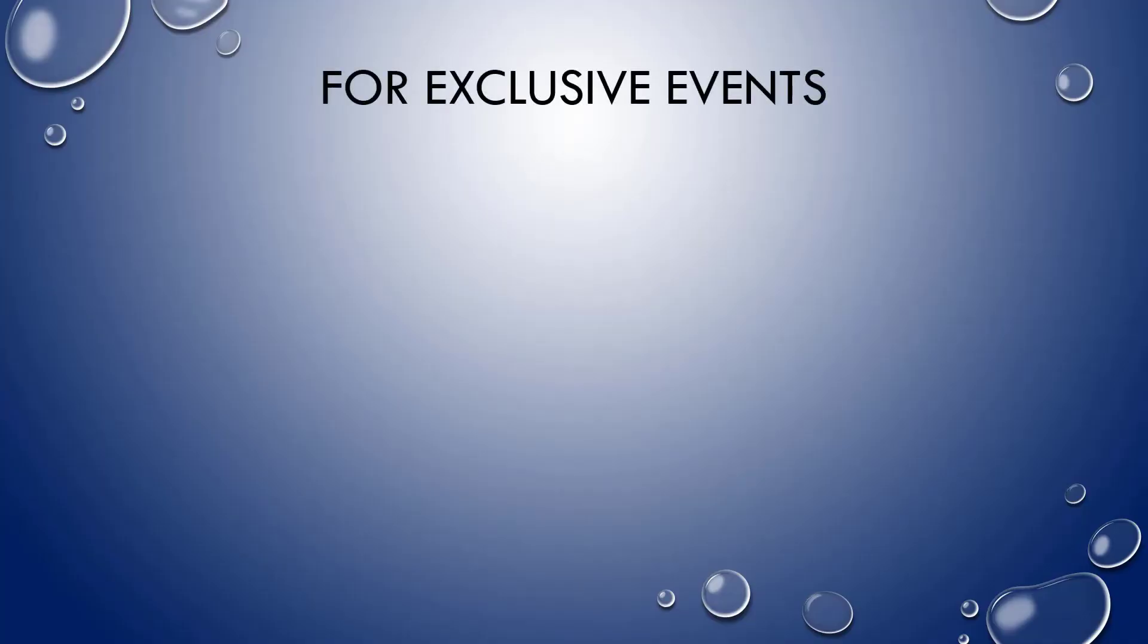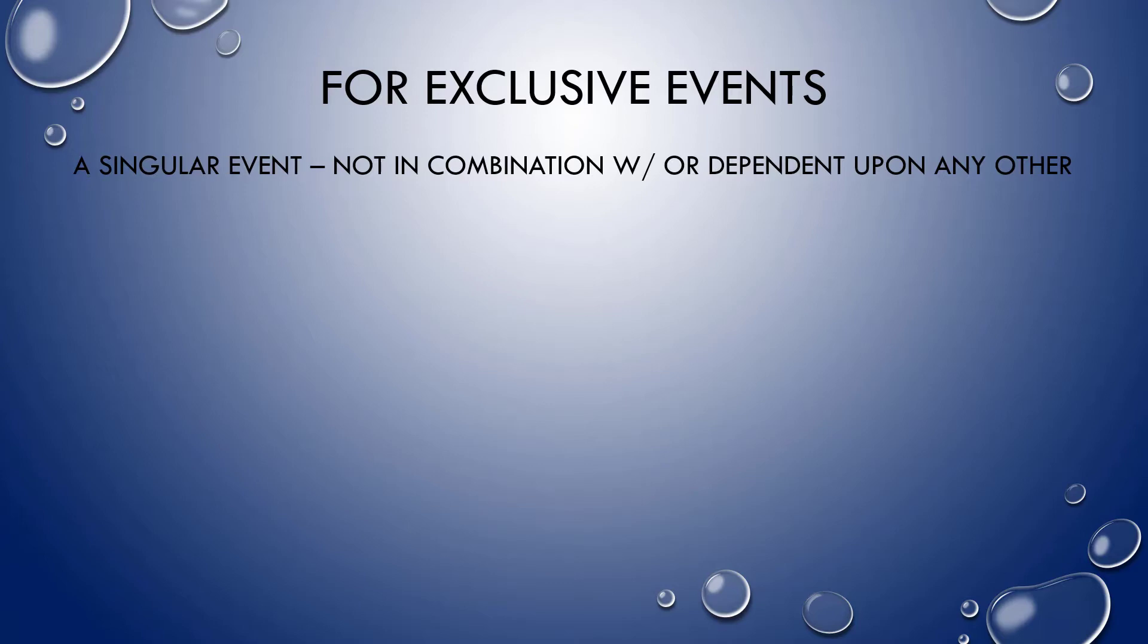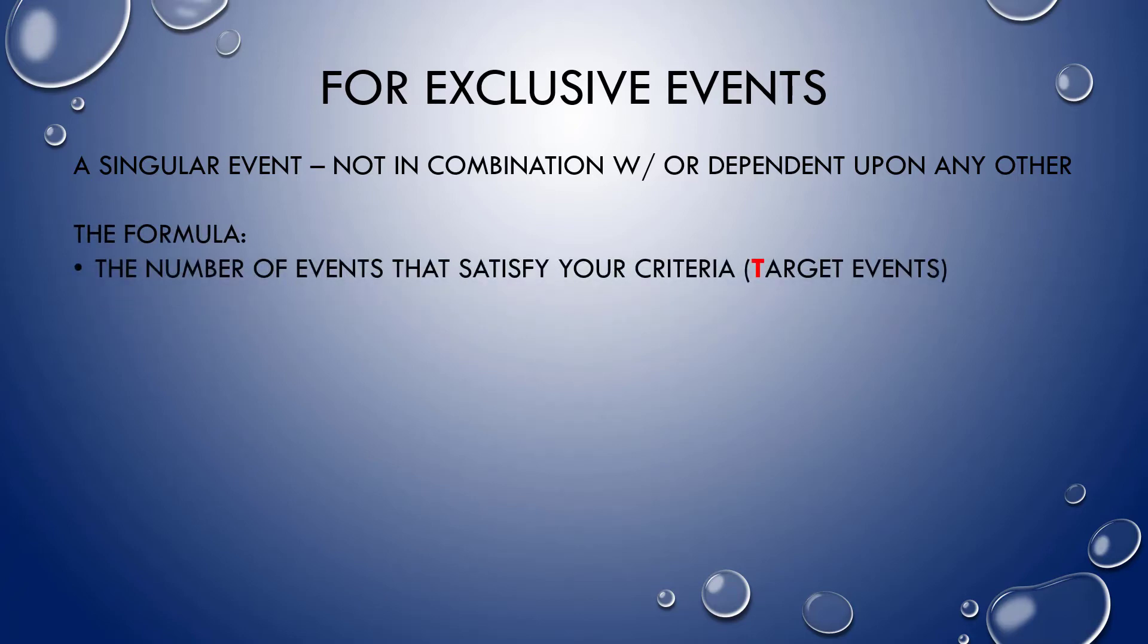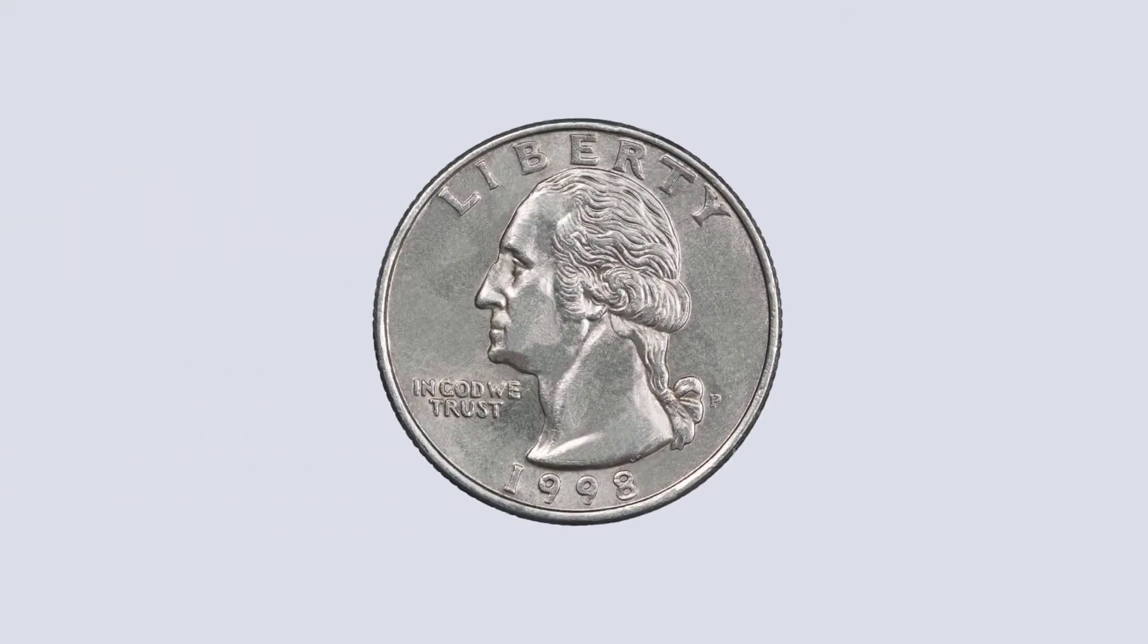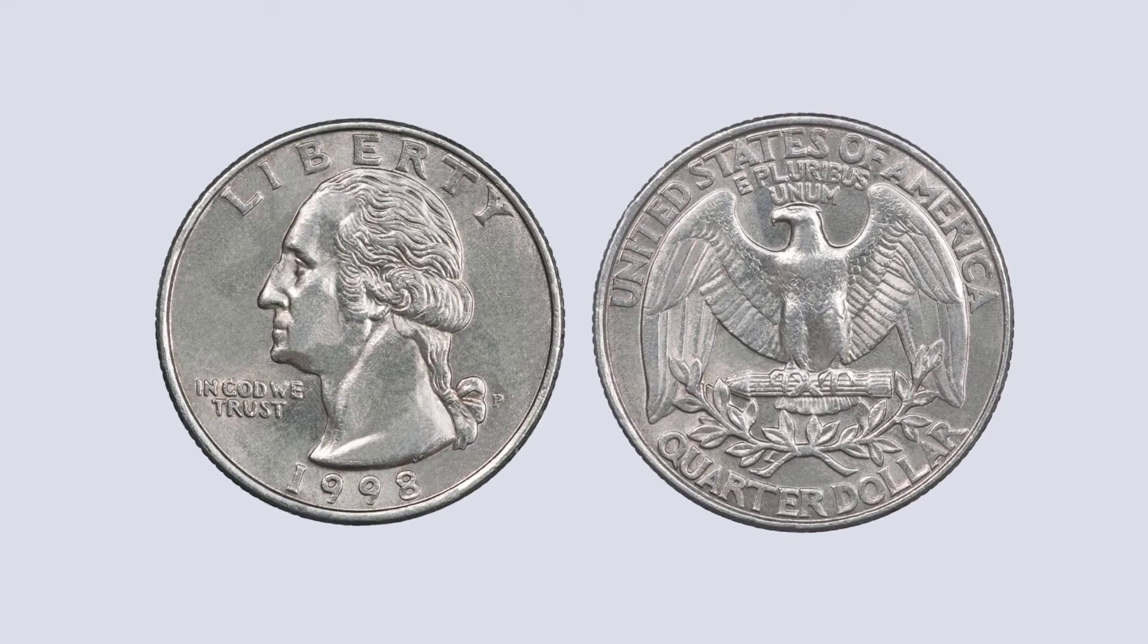Now, this is not a math course, so I'm going to keep things as basic as possible. Let's start with how you can figure the a priori probability of an exclusive event, meaning an event taken by itself, not in combination with, or dependent upon, any other event. The formula is very simple. We take the number of events that satisfy our criteria, we'll call that the target events, T, divided by the number of possible outcomes, P. And we get a formula that looks basically like this. The probability of A is equal to T divided by P. For example, what's the probability of coming up heads on a coin toss? Only one side satisfies the criteria, the target event, heads. But there are two possible outcomes. You have heads and tails. So the probability of any single outcome is going to be 1 out of 2, half, or 50%.